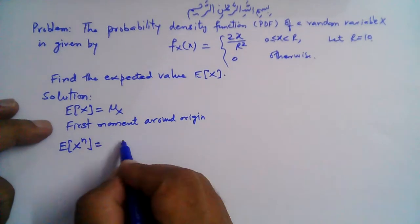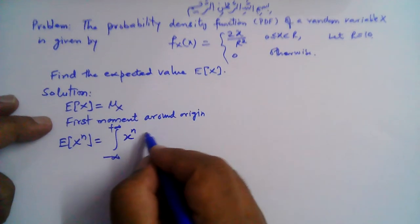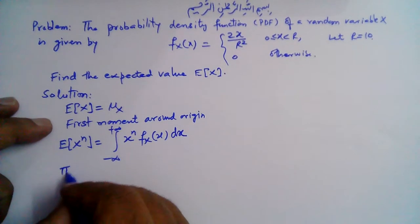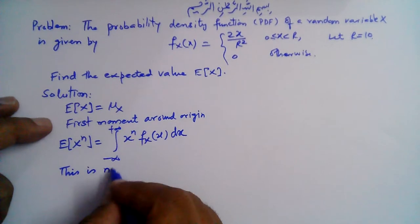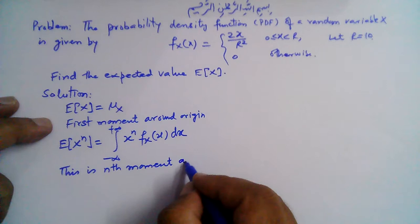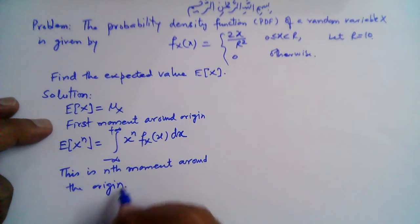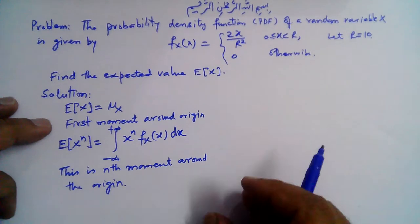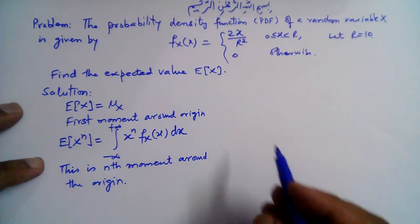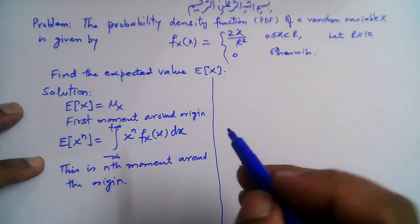In general, the nth moment around the origin is given by the integral from minus infinity to plus infinity of x raised to the power n times f(x) dx. This gives us the nth moment of random variable x around the origin. We just need to find the first moment around the origin, which is the expected value or mean value.